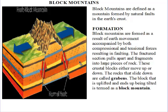The fractured section pulls apart and fragments into large pieces of rock. These crustal blocks are either moved up or down. The rocks that slide down are called grabens. The block that is uplifted and ends up being tilted is termed a block mountain.